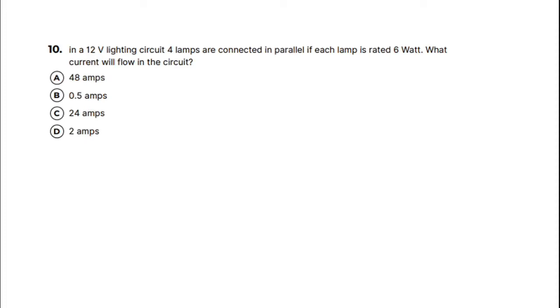Question 10: In a 12 volt lighting circuit, four lamps are connected in parallel. If each lamp is rated six watts, what current will flow in the circuit? The four options are 48 amps, 0.5 amps, 24 amps, or 2 amps. First, I'm just going to bring in an image of a parallel circuit.